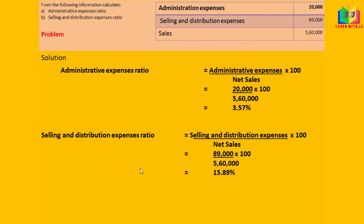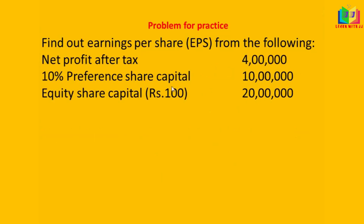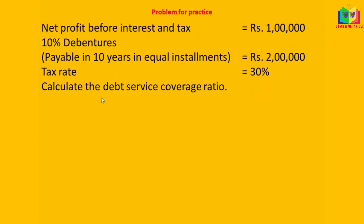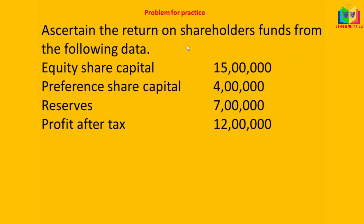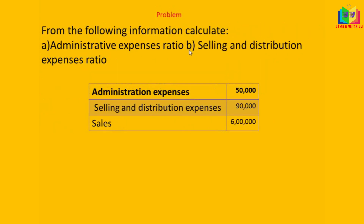In this video we learnt how to calculate expenses ratio, earning per share, return on shareholders fund, and interest coverage ratio — that is debt service coverage ratio. These 4 ratios were studied with one problem under each model. I hope you all know how to solve these 4 problems — simple problems you can easily solve. Thank you for your patience in listening.